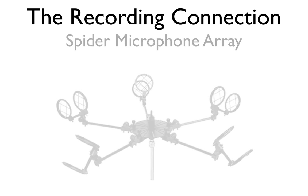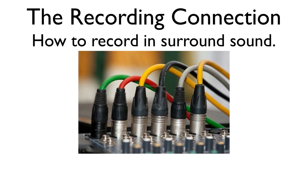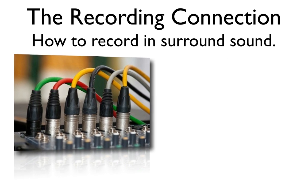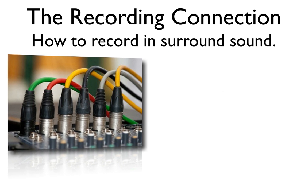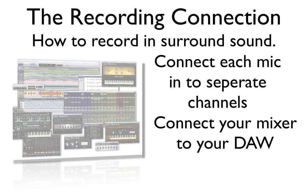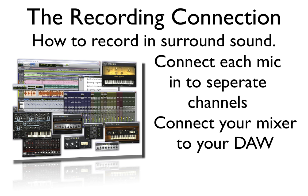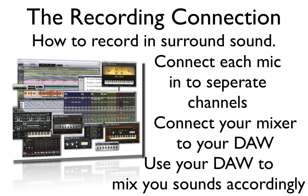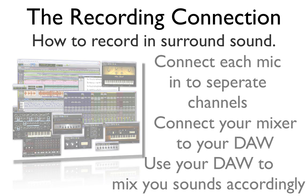The last thing we're going to talk about is how to record in surround sound. Recording in surround sound actually isn't too difficult. All you'll need to do is connect each microphone to individual channels, then connect the audio mixer to your DAW and simultaneously record each instrument onto individual tracks at the same time. The last step is to use your DAW to adjust the recording in a way that recreates the physical space of the original recording environment. And that's how you record in surround sound.